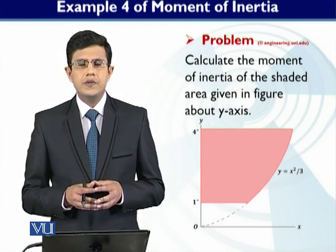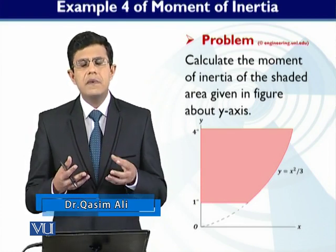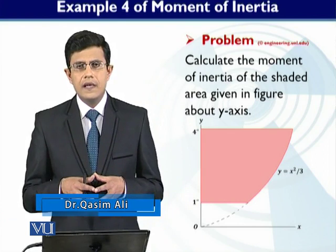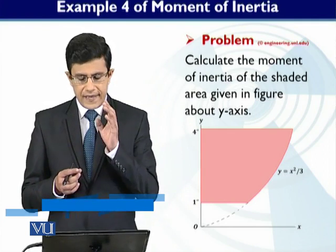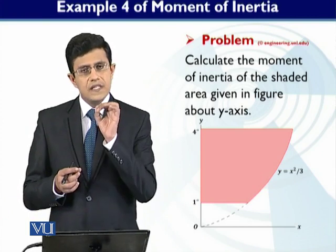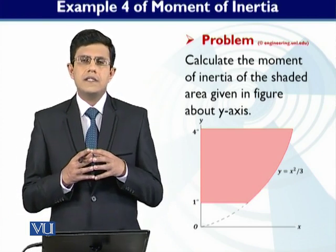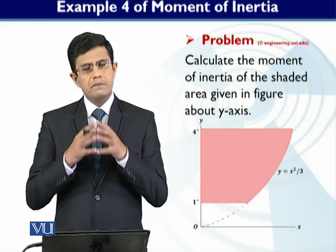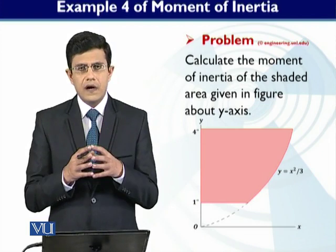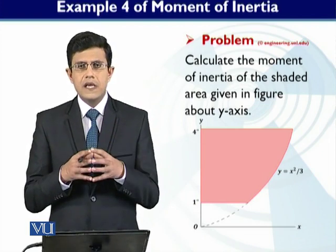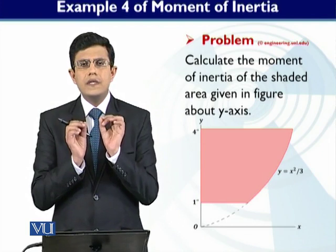This situation has changed a little bit. It says find the moment of inertia about the axis of the surface area. When you have a simple surface area, it has not said that it is a rigid body, but simply said that it is a surface area — so the situation is slightly different here.